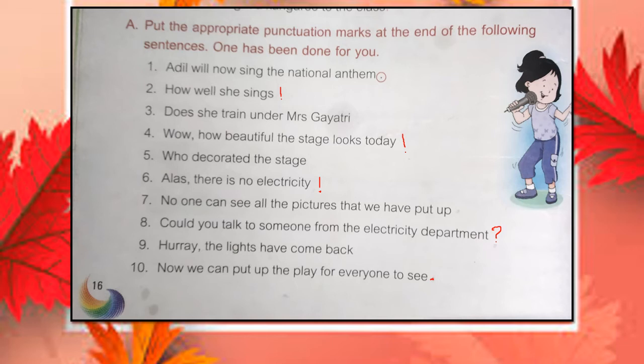Now let's look at Exercise A from your textbook: put the appropriate punctuation marks at the end of the following sentences — one has been done for you. Number two: 'How well she sings.' This will be an exclamation mark. Number five: 'Wow, how beautiful the stage looks today.' This is surprise, so also an exclamation mark.